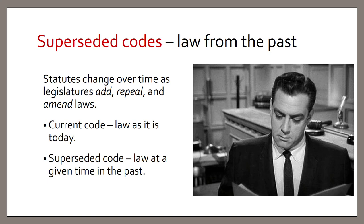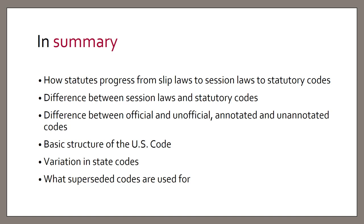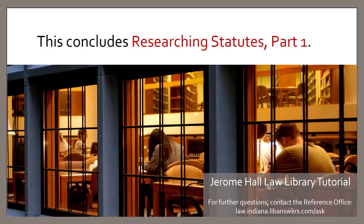You should now have a basic understanding of how statutes progress from slip laws to session laws to statutory codes, and understand the difference between session laws and statutory codes. You should also understand the difference between official and unofficial codes and between annotated and unannotated codes. I hope you have a sense of the basic structure of the U.S. Code and that state codes are structured in a variety of ways, as well as what superseded codes are used for. This concludes Researching Statutes Part 1. You should now go on to the next tutorial, Researching Statutes Part 2. If you have any questions, the reference librarians at the Jerome Hall Law Library are happy to help.